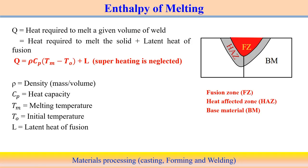Now we look at the enthalpy of melting. Since we are talking about the fusion welding process, the amount of energy actually utilized to melt the substrate material can be calculated. The total amount of heat energy Q required to melt a given volume of weld material has two components: the heat required to raise the solid to the melting point temperature, and the latent heat to change the phase from solid to liquid at that temperature. Both heats are counted here.